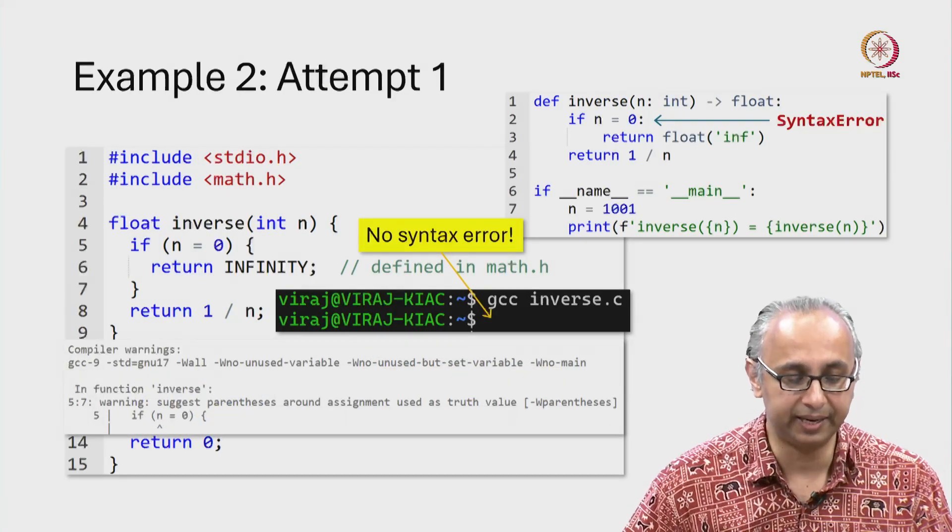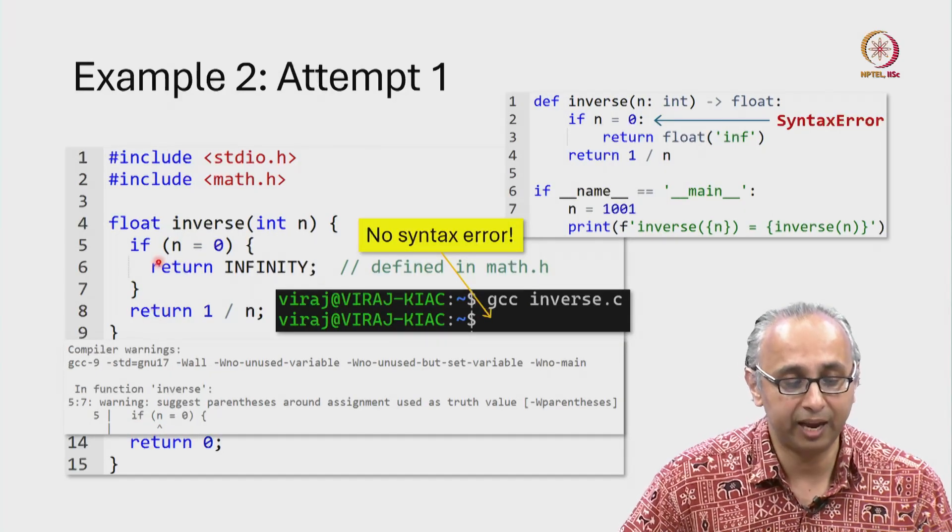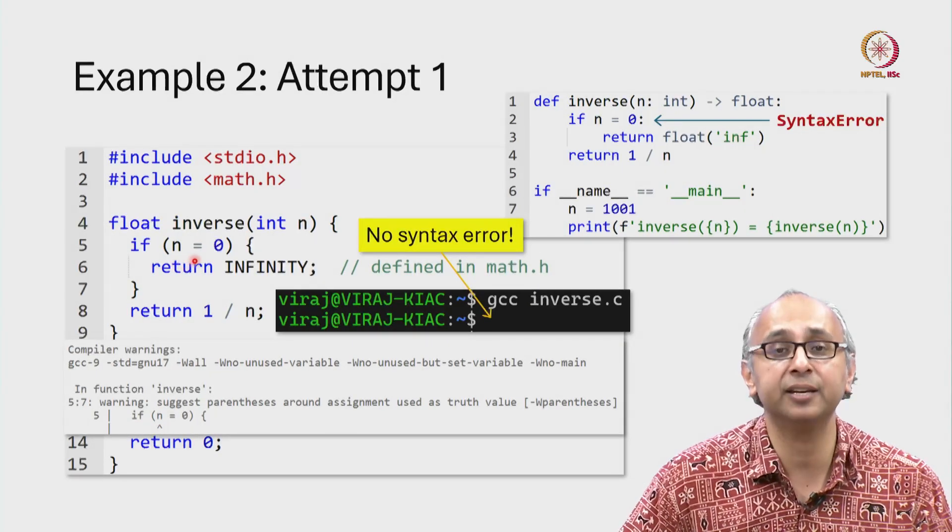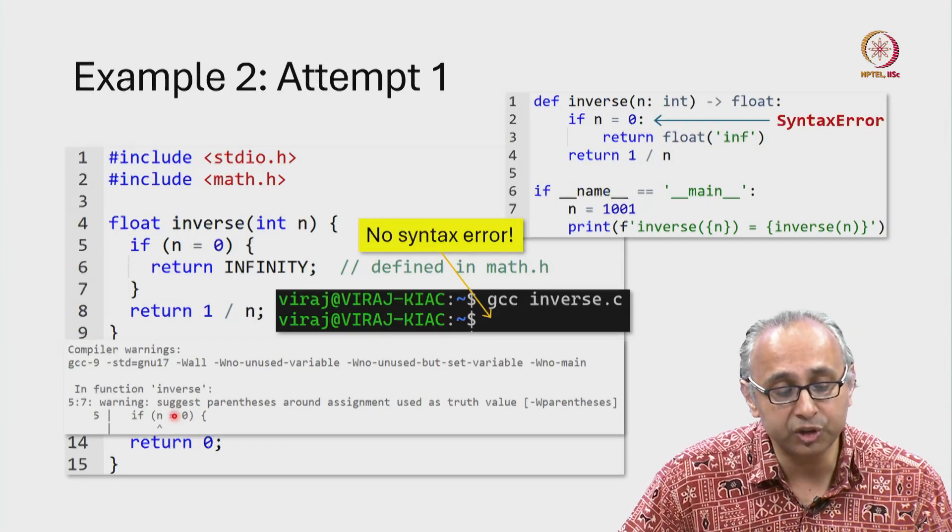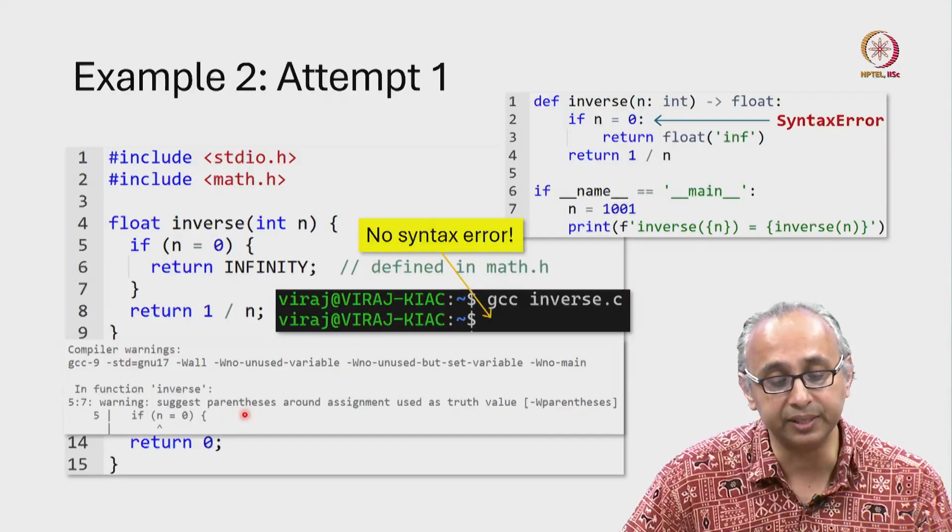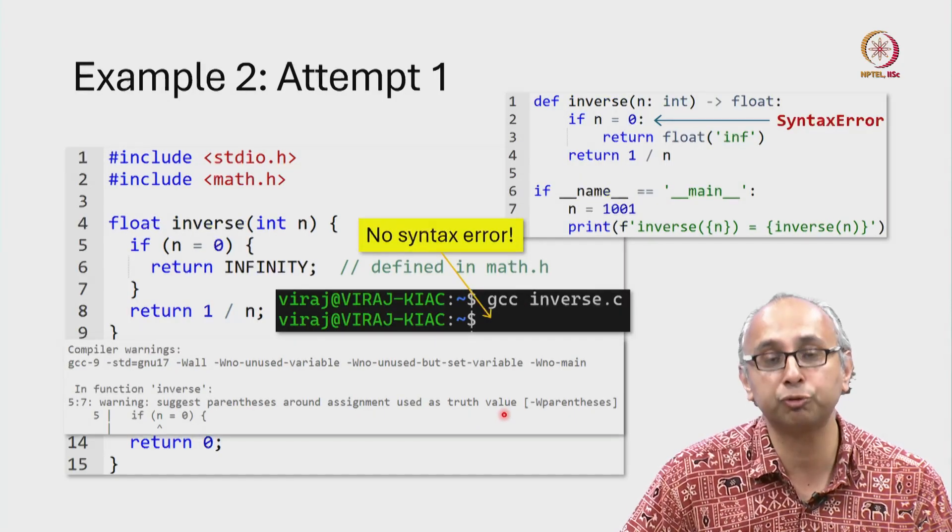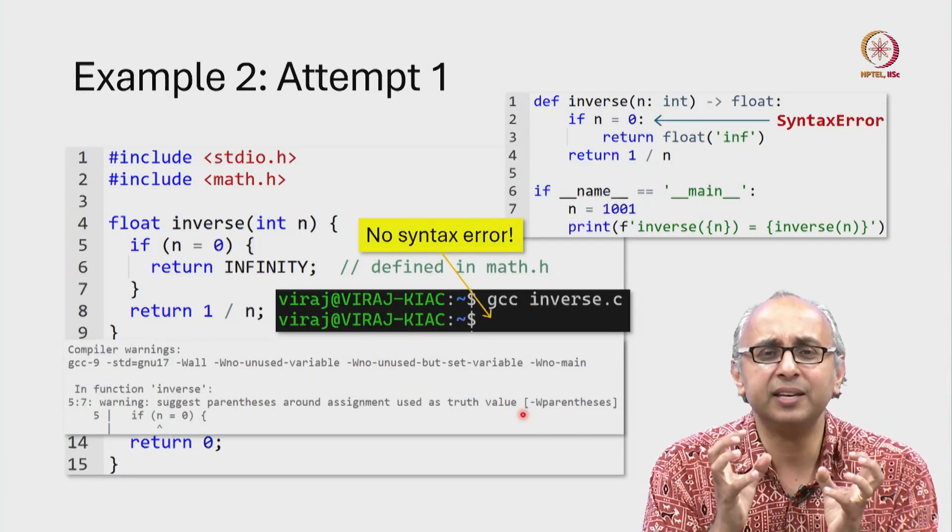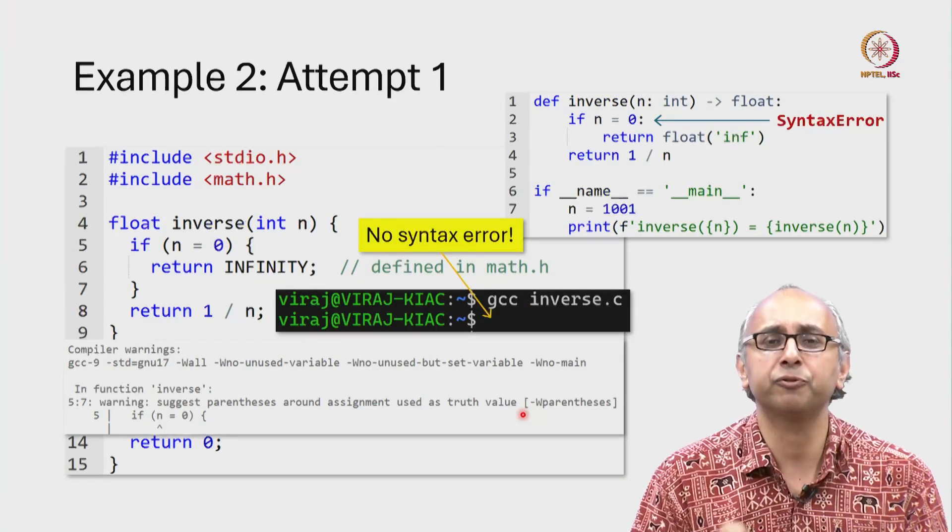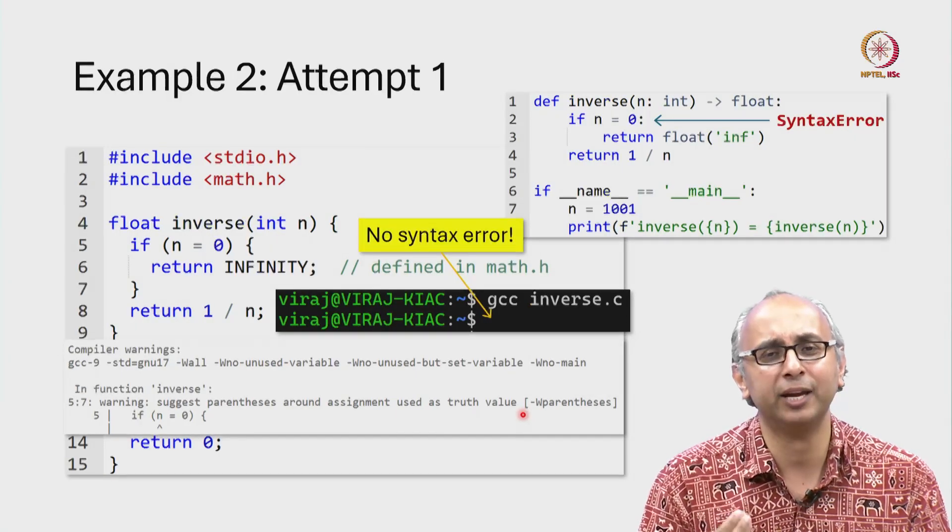The compiler is telling us that on line 5, we have this if condition, if n equals 0. And it's telling us that it suggests parentheses around assignments used as truth value. This is a very dense and terse piece of technical language. What is the compiler trying to tell us?